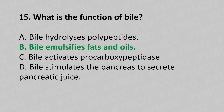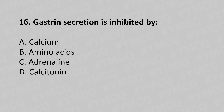Now let's move to question number 16. Gastric secretion is inhibited by: Option A: Calcium. Option B: Amino acids. Option C: Adrenaline. Option D: Calcitonin. And the answer is Option D: Calcitonin.